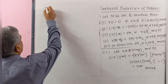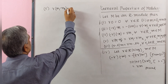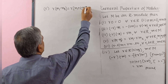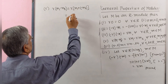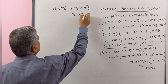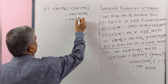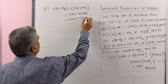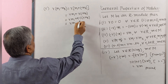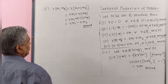Property number five: r·(m1 - m2) = r·m1 + r·(-m2) = r·m1 + (-(r·m2)) = r·m1 - r·m2. Proved.